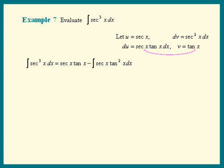This looks harder than the one we started out with — but is it? No, there's a trick to this one. By using a trick identity, we'll be able to produce the original integral. Here's a very useful trick identity: tan squared x equals secant squared x minus one.